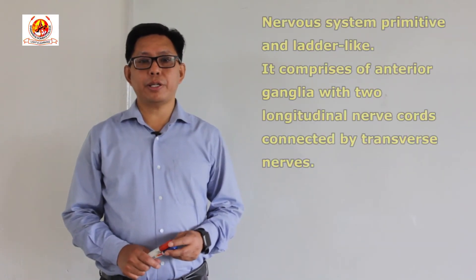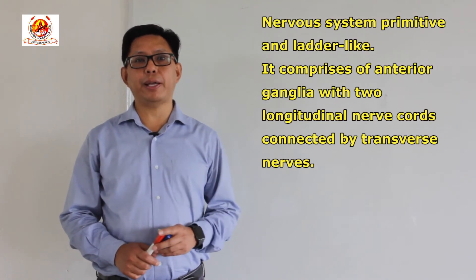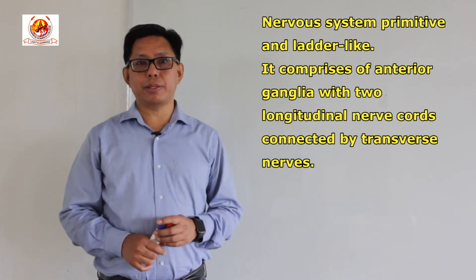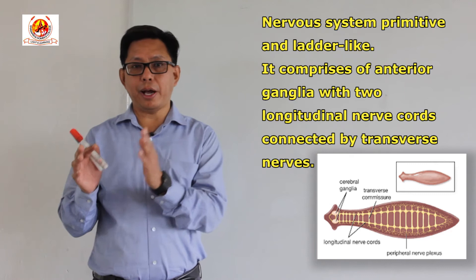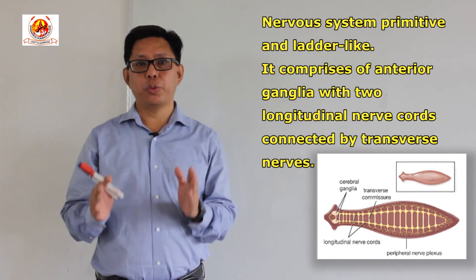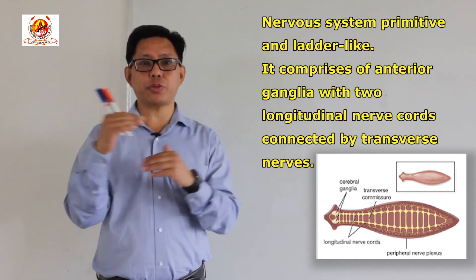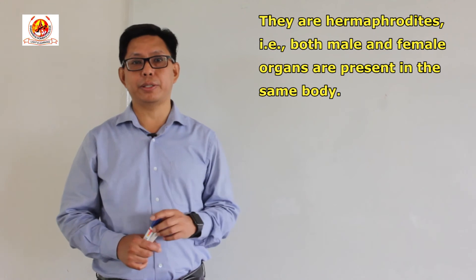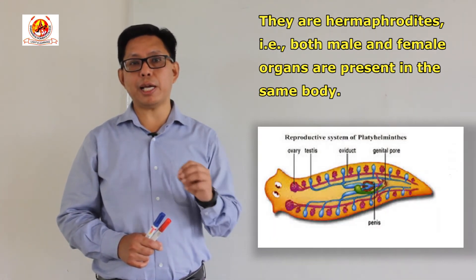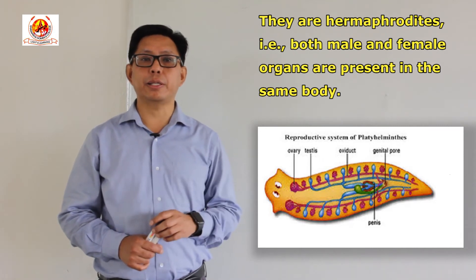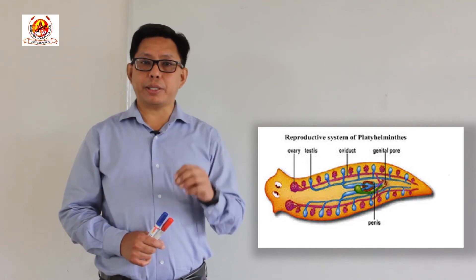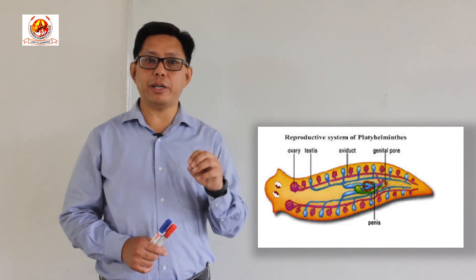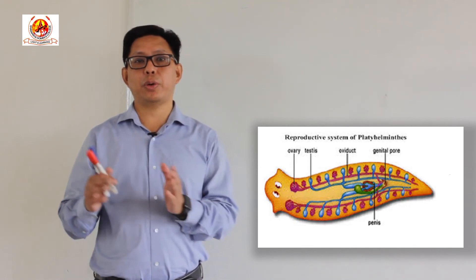The next important point is that the nervous system is primitive and ladder-like — that means it is very simple and in the form of two longitudinal nerve cords connected together by transverse nerves, resembling a ladder. Sexes are said to be united, or they are said to be hermaphrodite — meaning both male as well as female sexual organs are present in the same organism. However, in certain cases, although they are hermaphrodite, they show cross-fertilization.